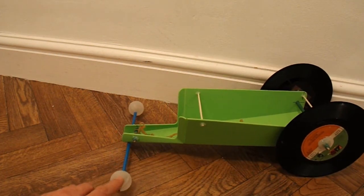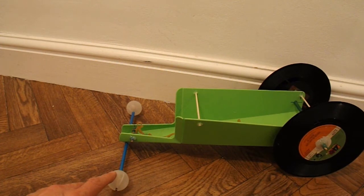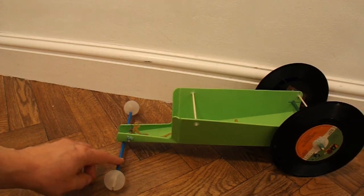Front wheels are the roller balls from underarm deodorants. The axle for the front wheel is a barbecue skewer inside a drinking straw.